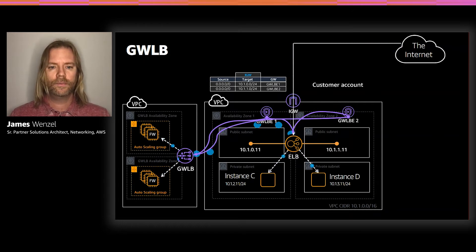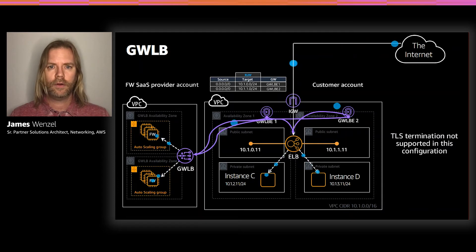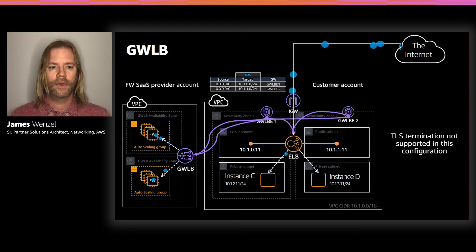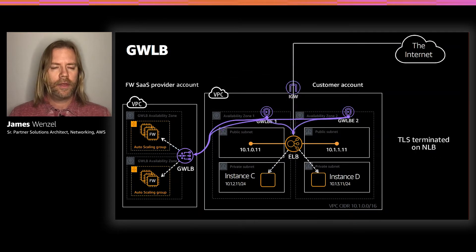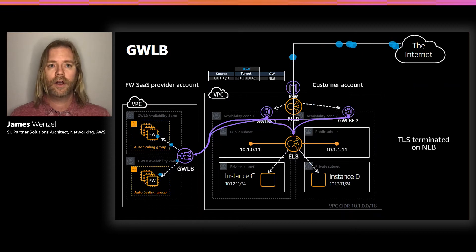There is one caveat: it does not support TLS termination for inspection by the firewalls. So if you have a scenario where you're TLS encrypting your packets and you want full deep packet inspection or firewalling, you need to handle some form of termination before the packets reach those endpoints. We can simply do this by adding something like an NLB. We change our ingress routing, add our NLB, the pathing is still the same, but the network load balancer handles the TLS termination. Then packets flow through the NLB, TLS is terminated, then the packets flow to the Gateway Load Balancer, and the firewalls or IDP can fully inspect the payload.